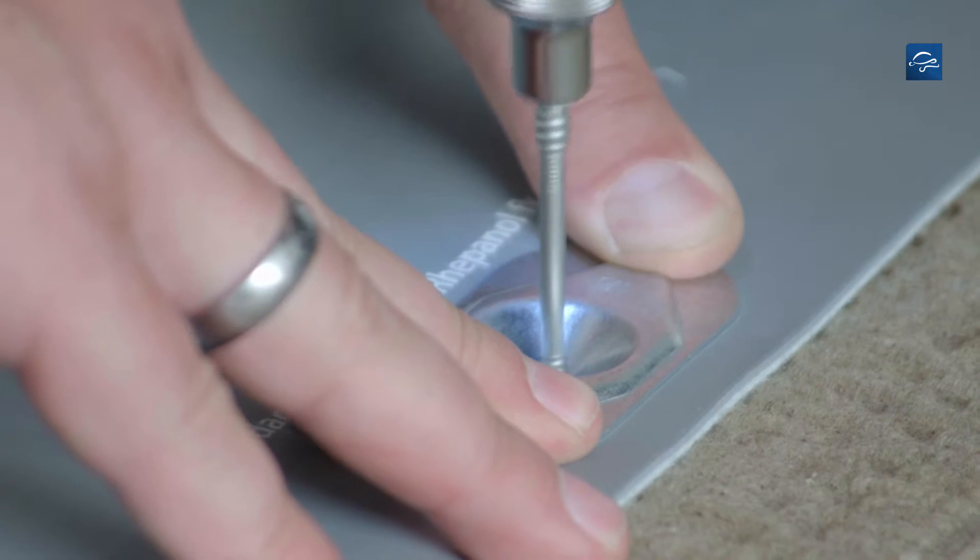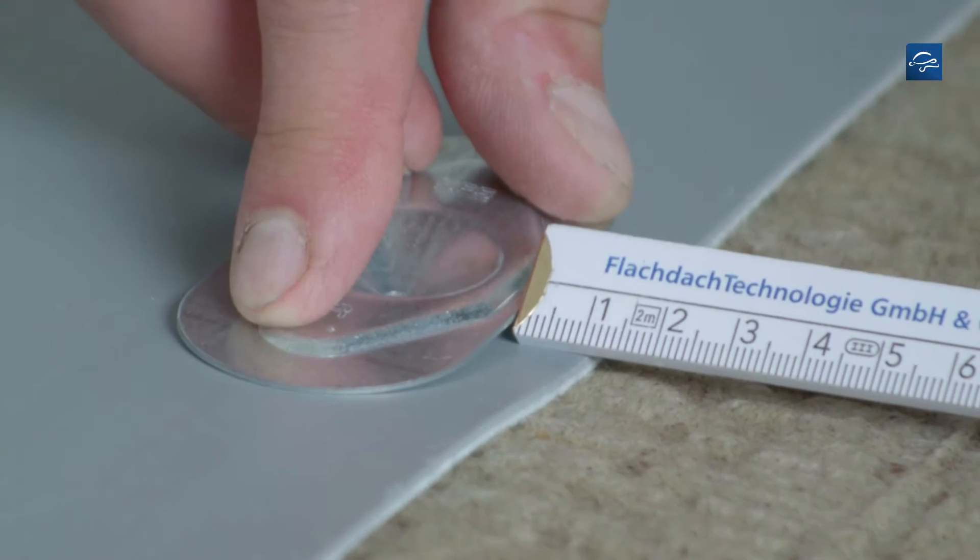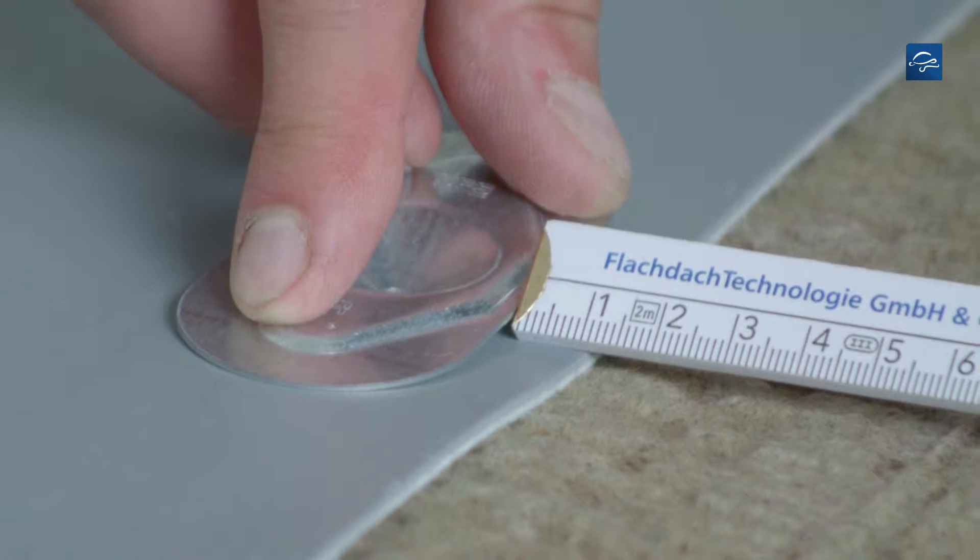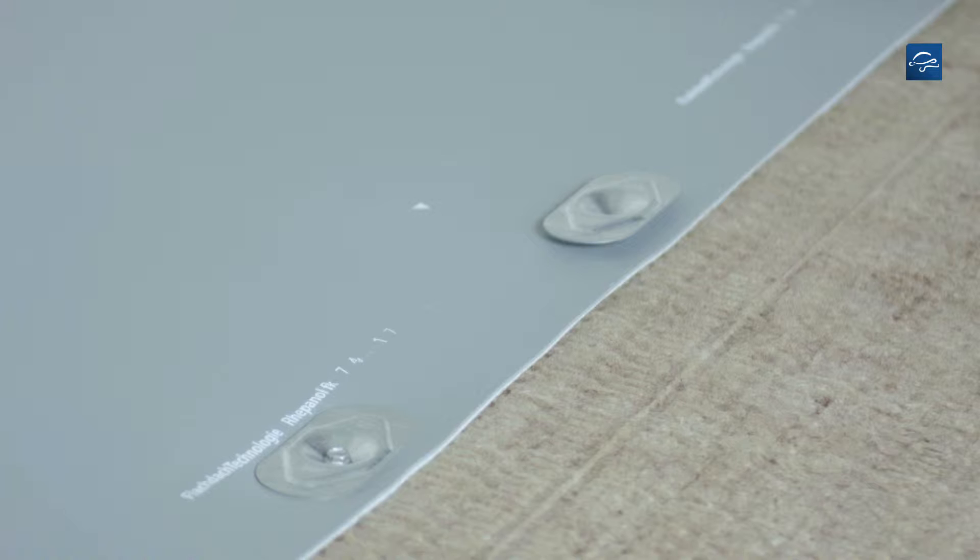FK Roofing Membranes with welding edge are marked with an arrow for positioning. First the membrane is mechanically fastened; place the load distribution plates at a distance of 1 cm from the membrane edge. The fastener spacing results from the individual fastening plan.